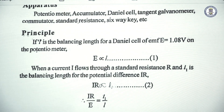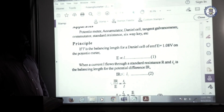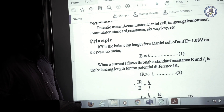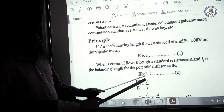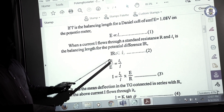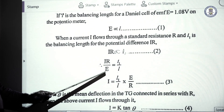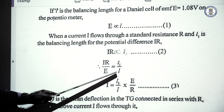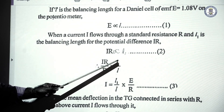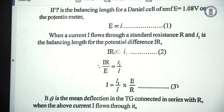Now when a current I is flowing through a standard resistance, and if the voltage across this resistance, I·R, is given to the potentiometer circuit, then I·R is proportional to L1. From these two expressions, we can write I·R divided by E is equal to L1 by L, where L is the balance length for the Daniel cell and L1 is the balance length for the potential difference I·R when resistance R is included.